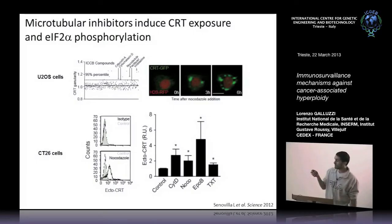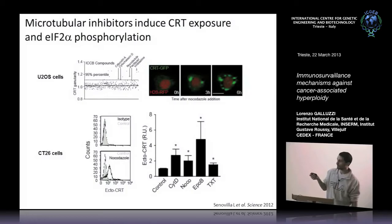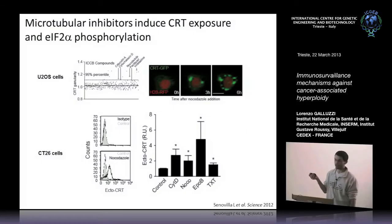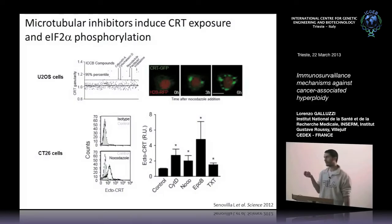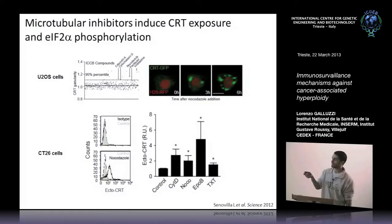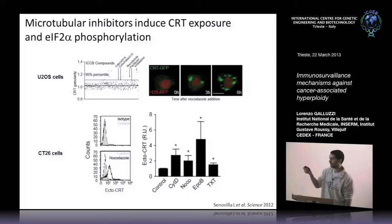Starting from this initial observation, we asked whether tetraploidization and hyperploidization are associated with the activation of an immunosurveillance mechanism. To start validating this, we measured the exposure of calreticulin by cytofluorometry following treatment of cells with different microtubular inhibitors including cytochalasin D, nocodazole, epothilone B, and taxotere — some of which are used in the clinic. In all these cases we observed an increase in the exposure of calreticulin on the cell surface.